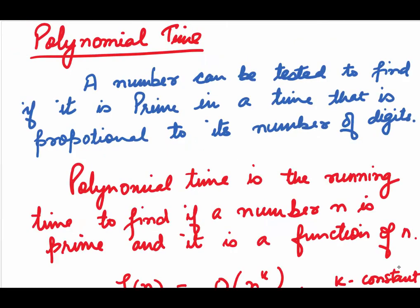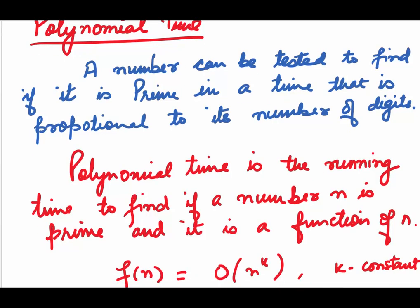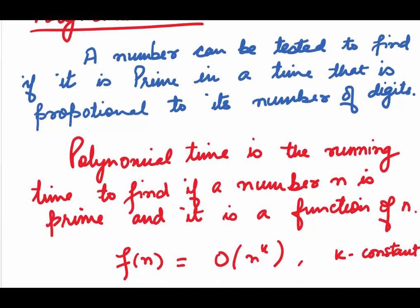Let's come to time complexity and polynomial time. When we deal with very big numbers to find whether they are prime or not, we use algorithms and they take a lot of time. A number can be tested to find if it is prime in a time that is proportional to its number of digits. The amount of time it takes is known as the time complexity. Polynomial time is the running time to find if a number n is prime and it is a function of n. It is given by f(n) is of the order n to the power k where k is some constant.